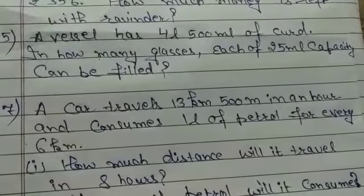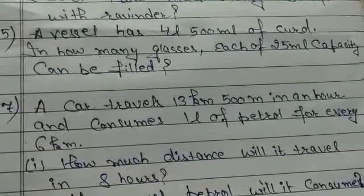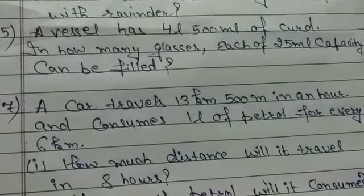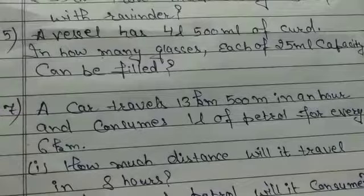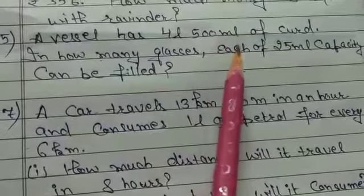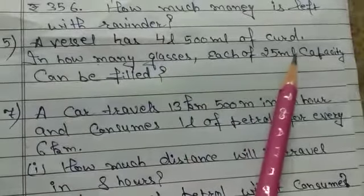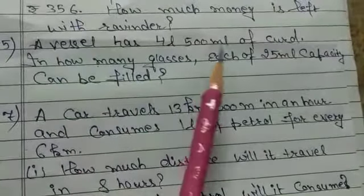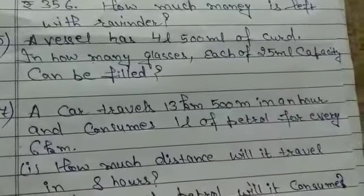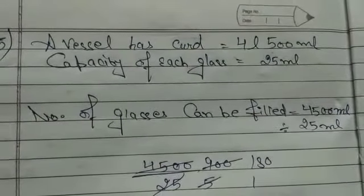Question number 5: A vessel has 4 liters and 500 ml of curd. In how many glasses, each of 25 ml capacity, can the curd be filled?